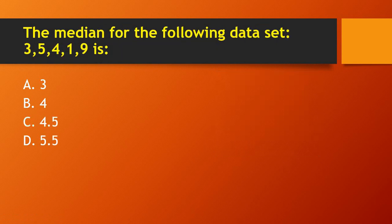Next question: the median for the data set 3, 5, 4, 1, and 9. First, arrange the numbers in increasing order: 1, 3, 4, 5, 9. You can clearly see that 4 is the median of this given data set. The right answer is 4.